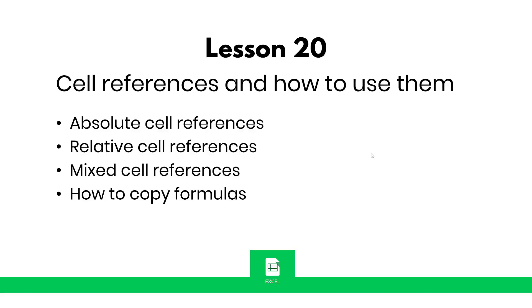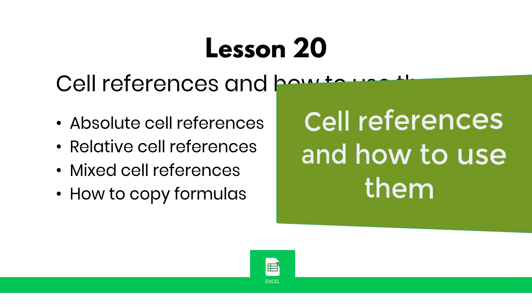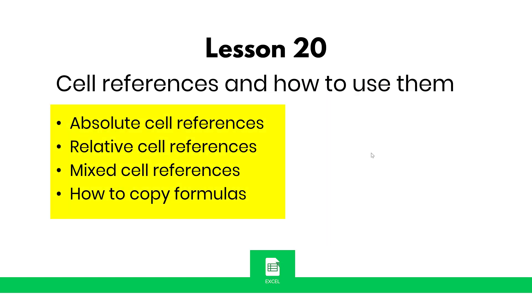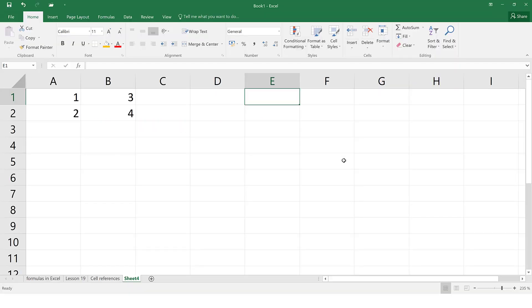Hi and welcome to another lesson of the Excel for Absolute Beginners course. This is lesson 20 and we are looking at cell references and how to use them. In the course of the lesson you will learn about absolute cell references, relative cell references, how to mix them up, and how to copy formulas across various cells.